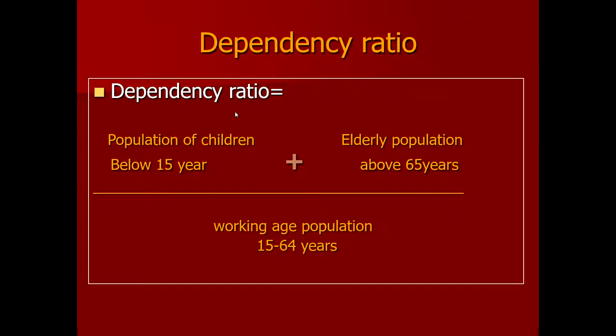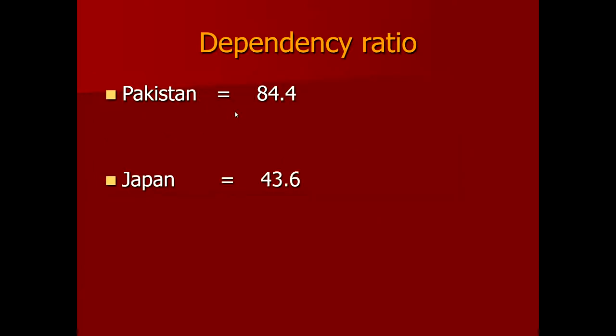To maintain uniformity, the same formula is used worldwide. Using this formula, Pakistan has a dependency ratio of 84.4, meaning for every 100 productive people there are 84.4 dependent people. Compare this with Japan, where the dependency ratio is only 43.6%, meaning only 43 people are dependent on every 100 economically independent people. There is a vast difference between the two populations.